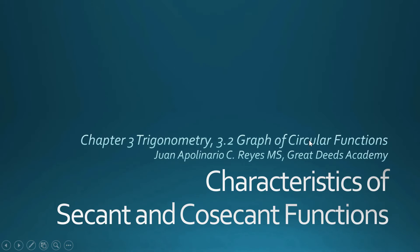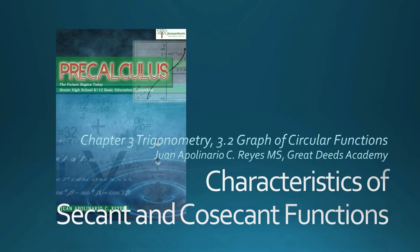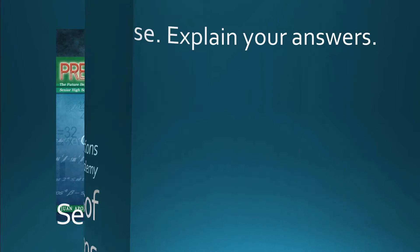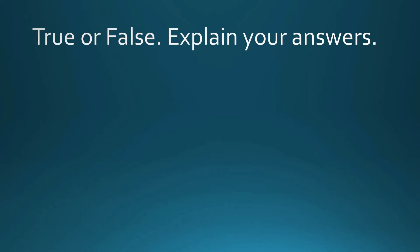Let us do some exercises — true or false — about the characteristics of the secant and cosecant functions. True or false, explain your answers: cosecant of π/4 is equal to 1 over cosine of π/4.